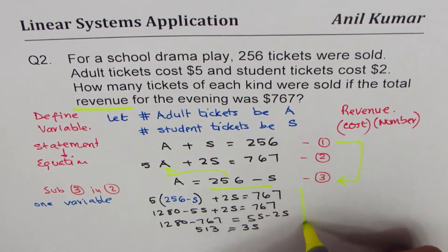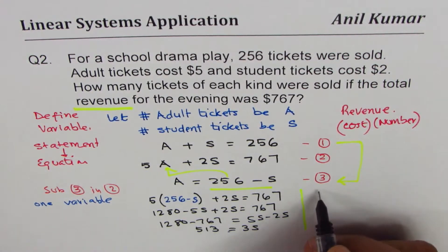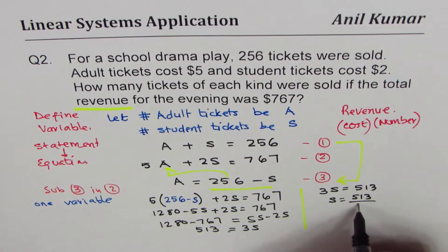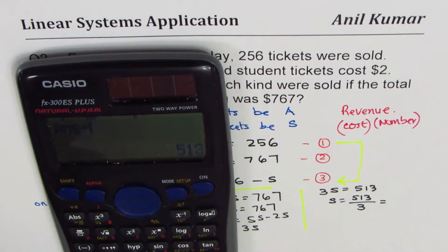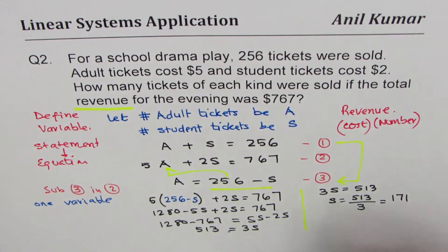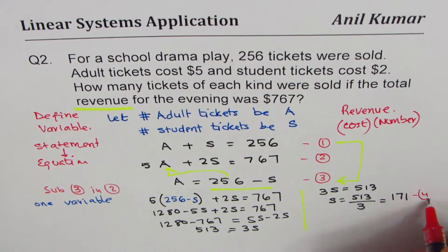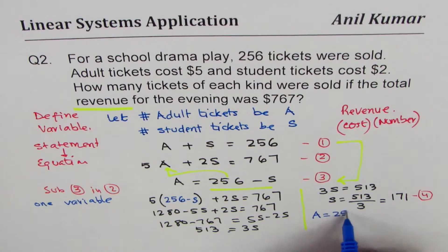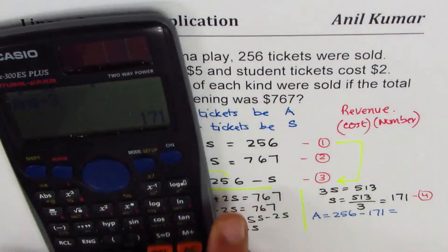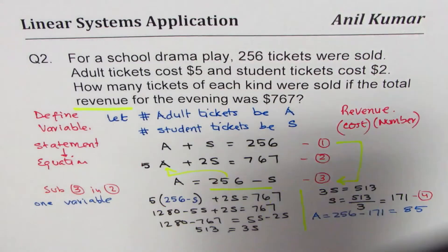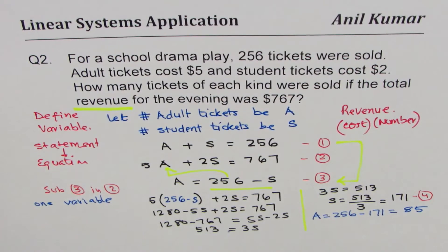Now we can solve for S. We rewrite: 3S equals 513, so S equals 513 divided by 3, which gives us 171. So we know 171 student tickets were sold. We call this equation 4. To find the number of adult tickets, we substitute 4 into equation 3: A equals 256 minus 171, which is 85.